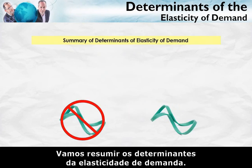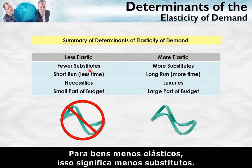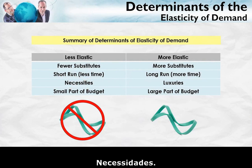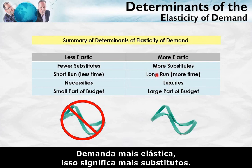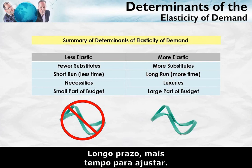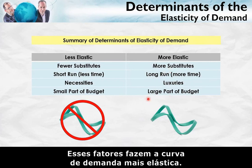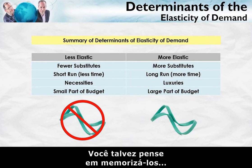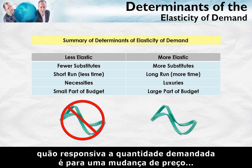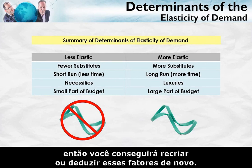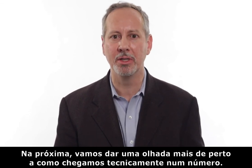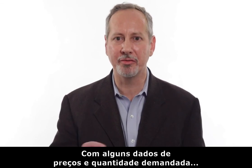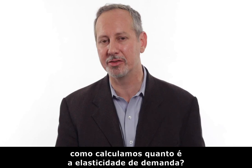To summarize the determinants of the elasticity of demand: less elastic goods have fewer substitutes, a short-run time horizon with less time to adjust, are viewed as necessities, and make up a small part of the budget. More elastic demand is associated with more substitutes, a long-run horizon with more time to adjust, goods viewed as luxuries, and a large part of the budget. If you have to, memorize these — but once you understand that elasticity means how responsive quantity demanded is to a change in price, you'll be able to figure out these factors. Next time, we'll look at how to technically calculate the elasticity of demand given prices and quantities.